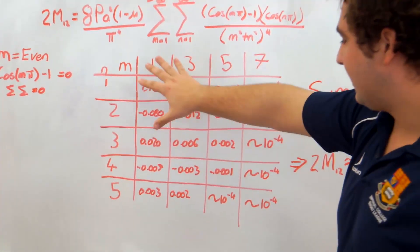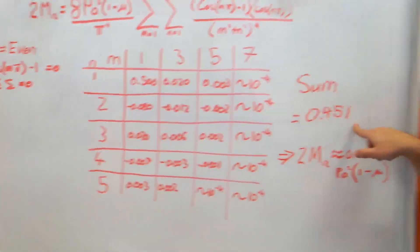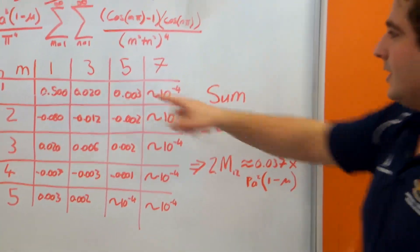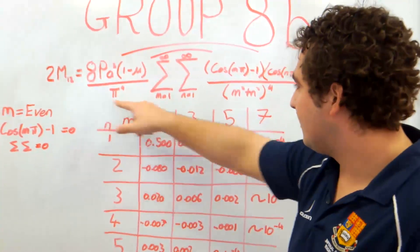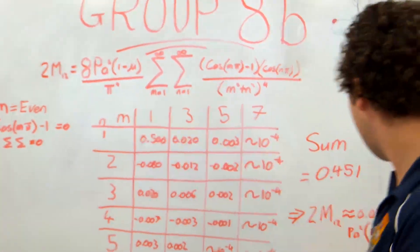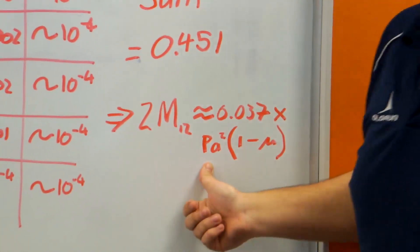and sum up until we get to negligible values. This sums to 0.451. When putting that back into the equation for the summation, and multiplying it through with the 8, and over pi to the 4, gives us this final solution for the value of the force in the corner.